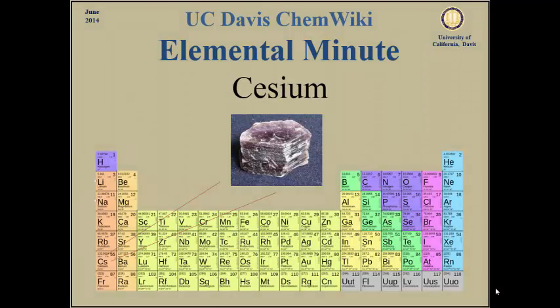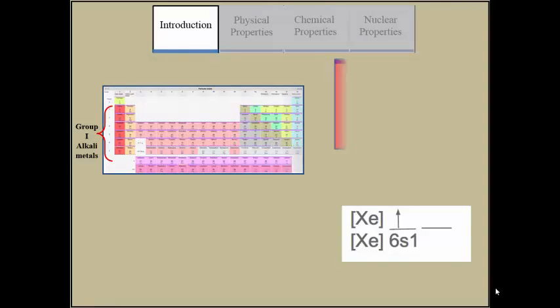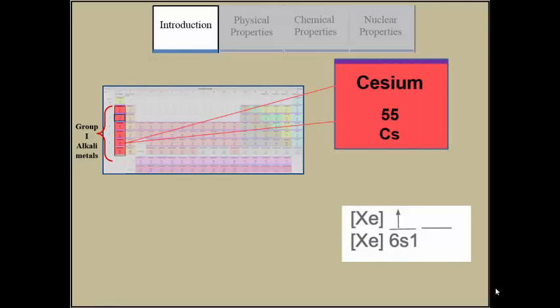Cesium is an alkaline metal located on the far left corner of the periodic table. It has a high metallic character and has one electron in its outer shell. Cesium is silvery gold and is mostly found in different minerals in the Earth's crust such as polycite.